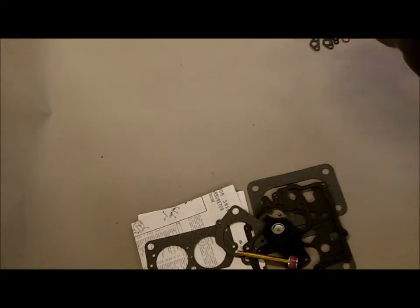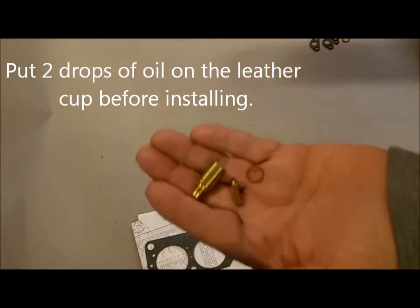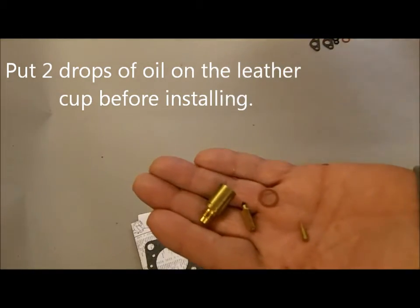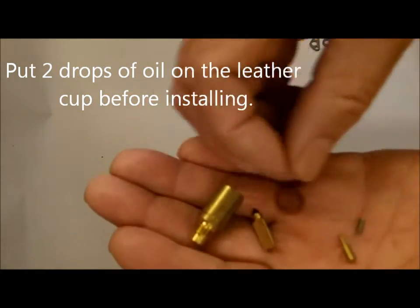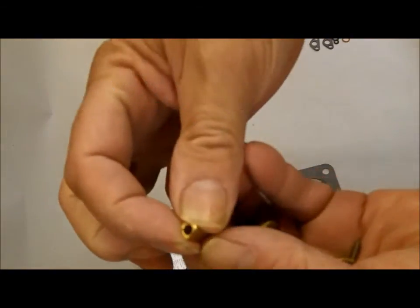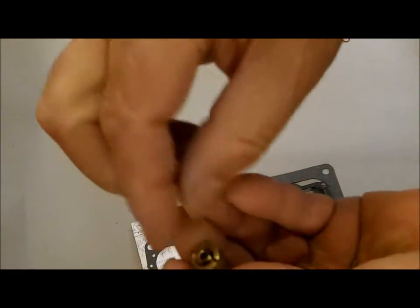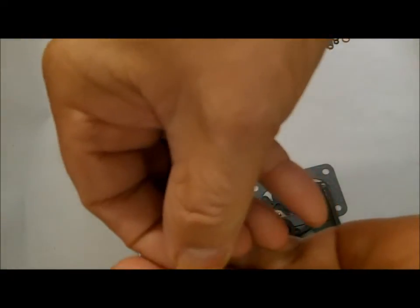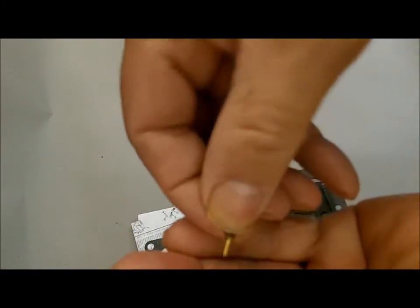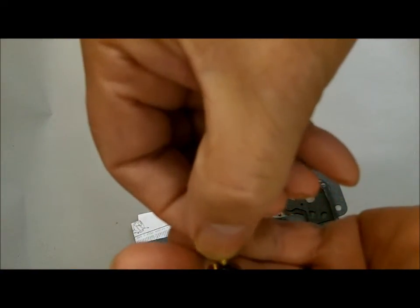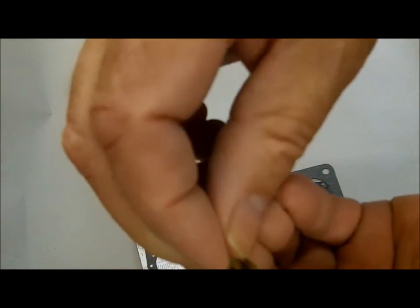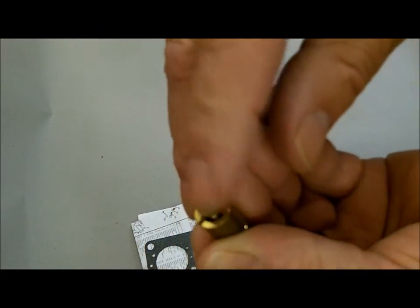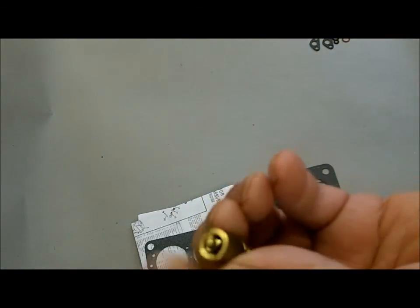This particular kit uses a spring loaded needle and seat. So you put it in like this. You put the spring in next, and then you put the little cylinder in there. It's spring loaded, which is real nice when you're doing any off-roading.